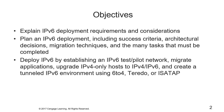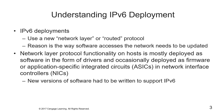Our objectives for this week: we're going to explain IPv6 deployment requirements and considerations; plan the deployment including success criteria, architecture decisions, migration techniques, and the tasks you'll have to complete; and deploy IPv6 by establishing a test or pilot network. We're going to migrate applications, upgrade v4-only hosts to v4/v6, and configure a tunneled v6 environment using 6to4, ISATAP, or Teredo.